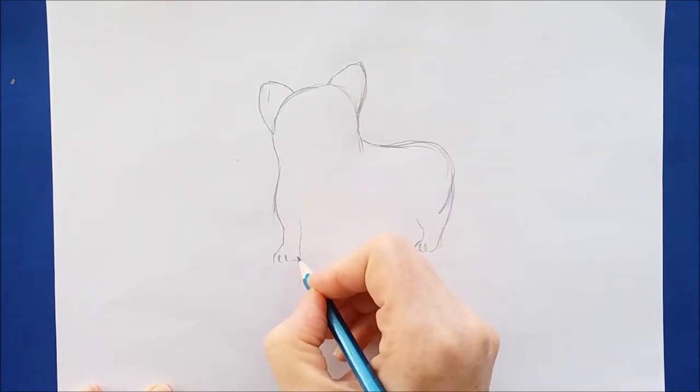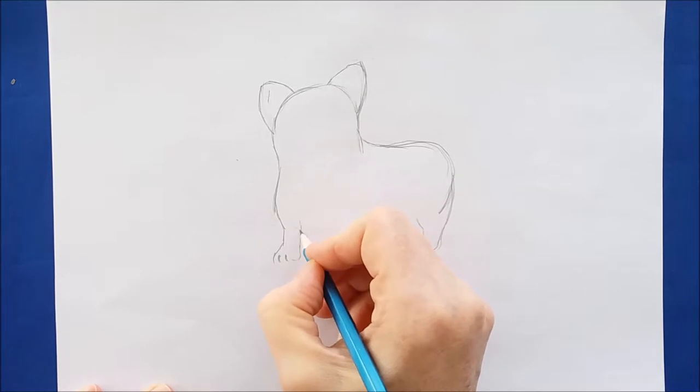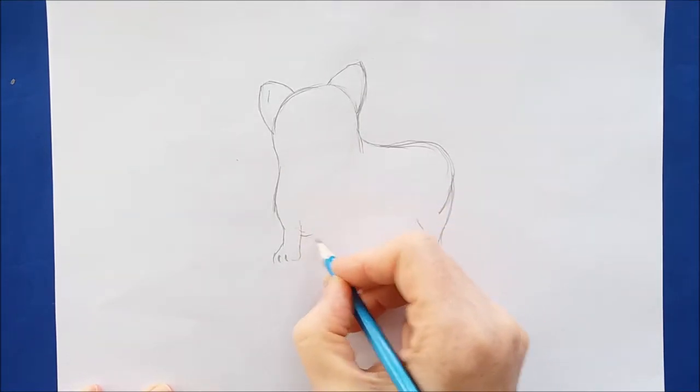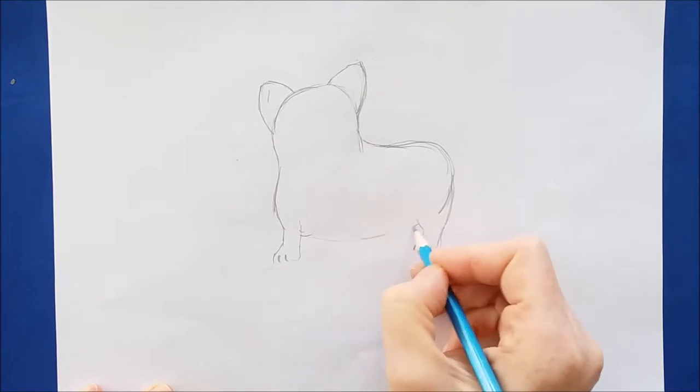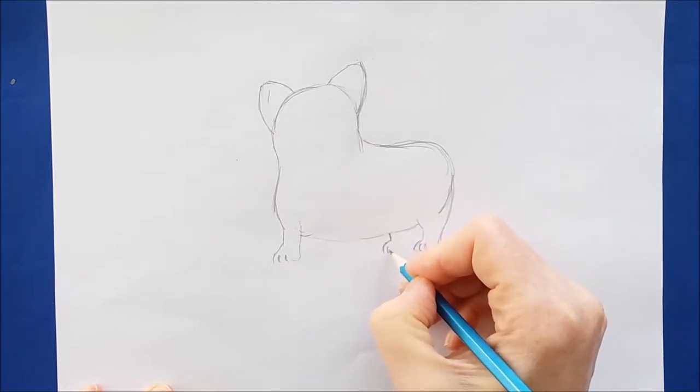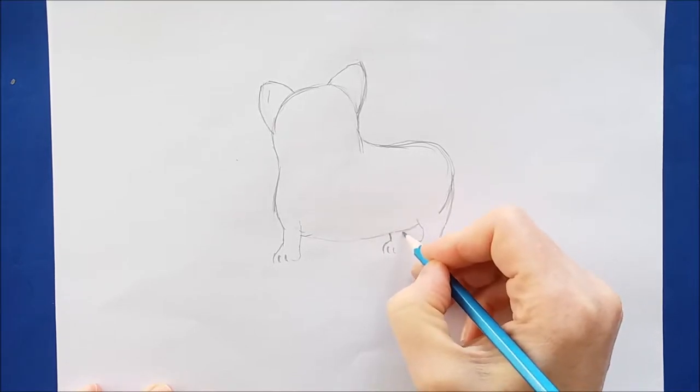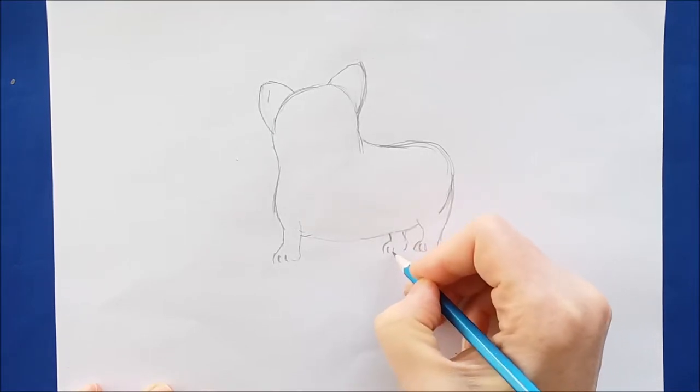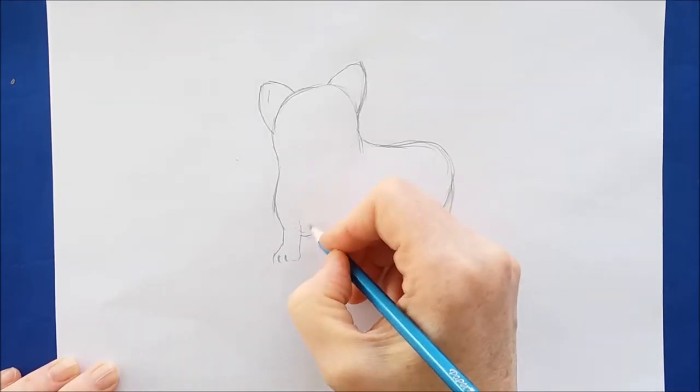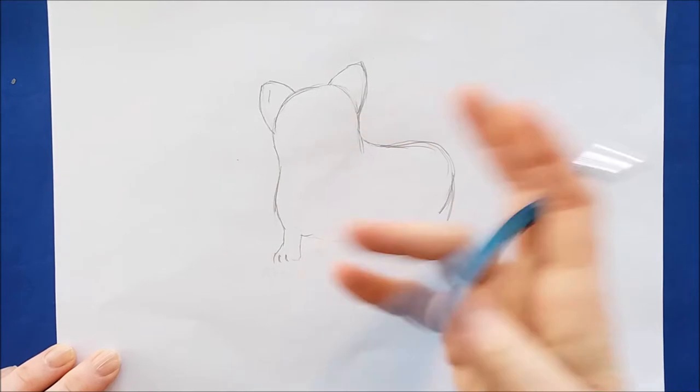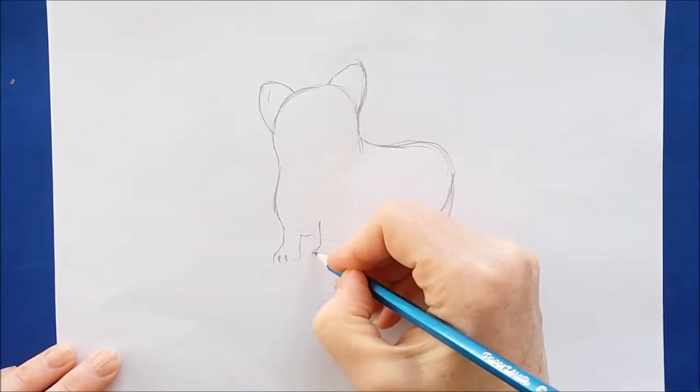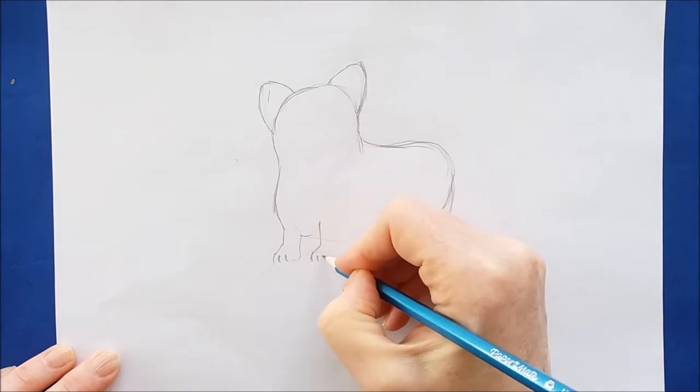I'll do this in the front. And then I'm going to draw a little line for the tummy of the corgi. And then I'll draw the other hind paw right here. So it's just a little downward line and then a couple curved lines for the toe.